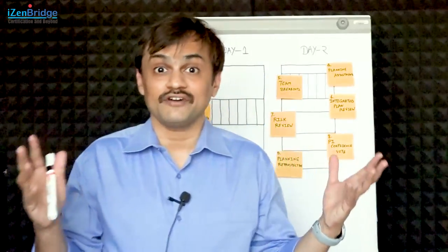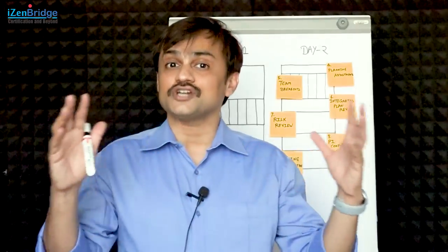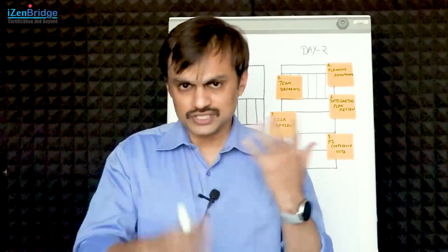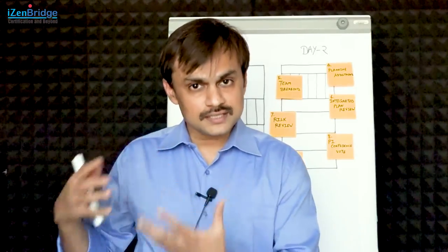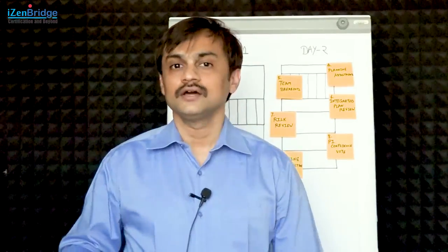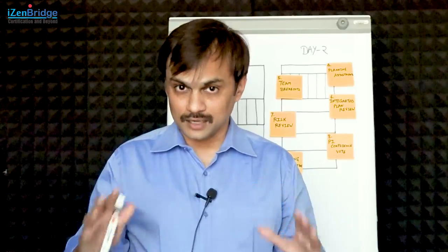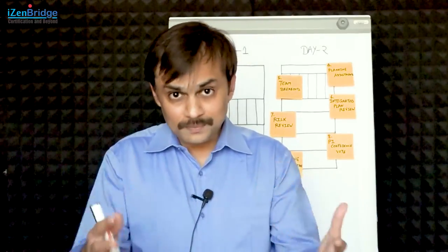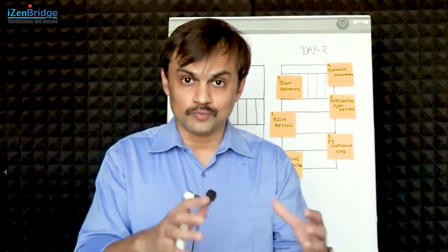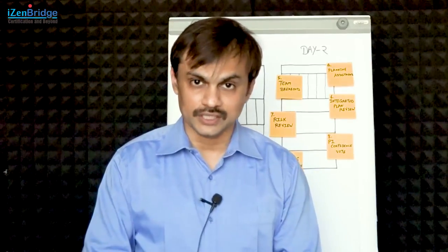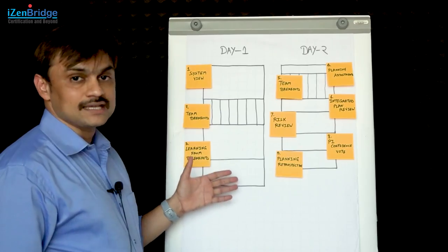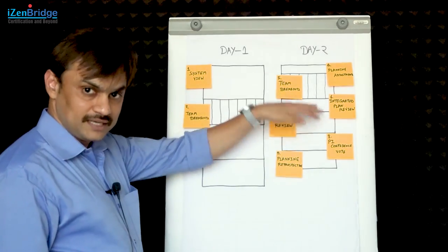Think of it like there are 125 plus people - the complete Agile release train group, the business owners which are key stakeholders, the system architect, product management - all these people are coming and sitting together in order to do a PI planning meeting, and all the teams are also present for this large event. When all these people come together, we start with an example of a 2-day PI planning meeting agenda.